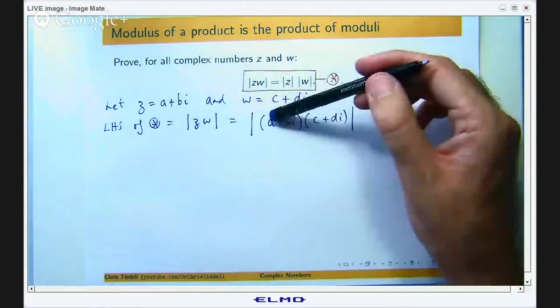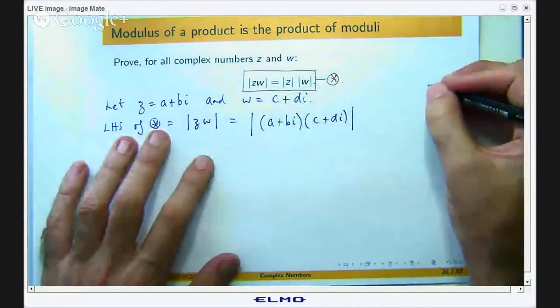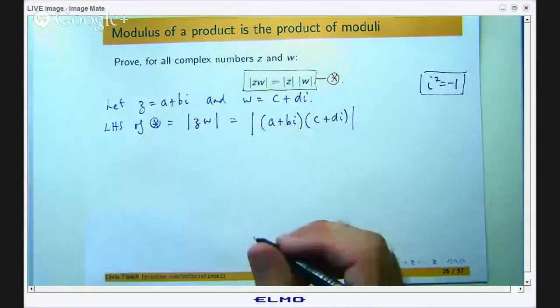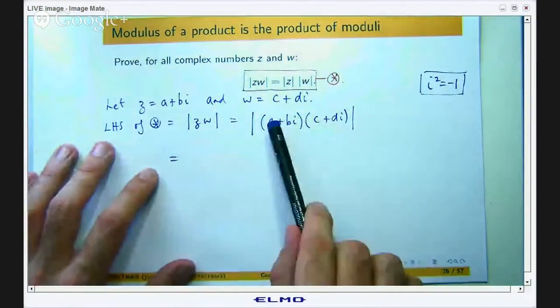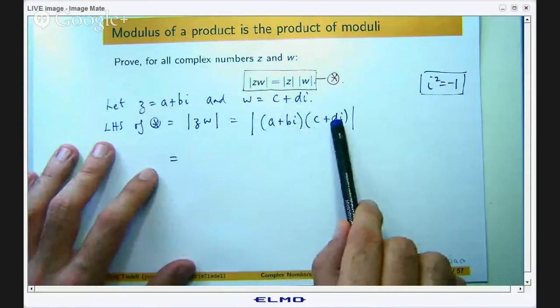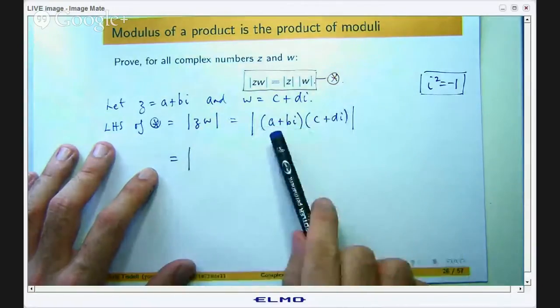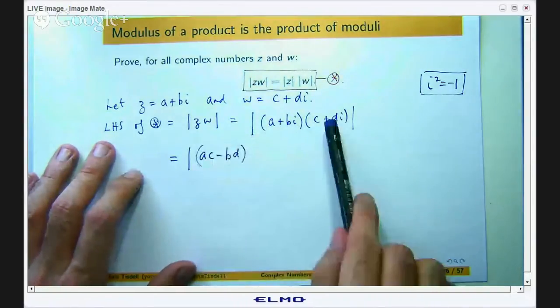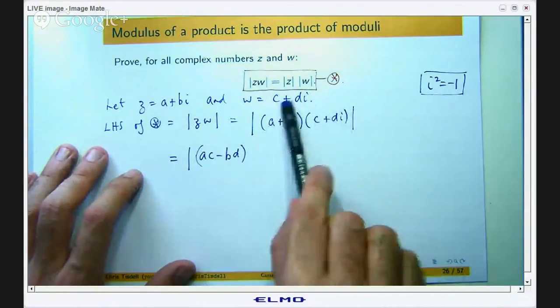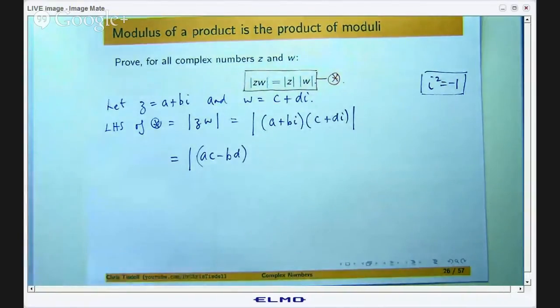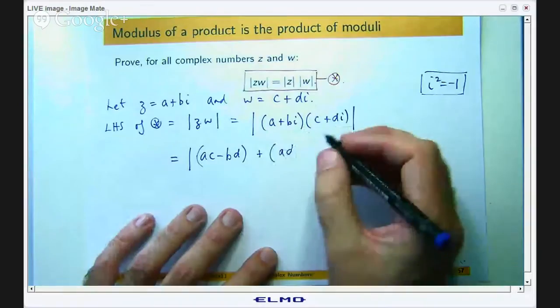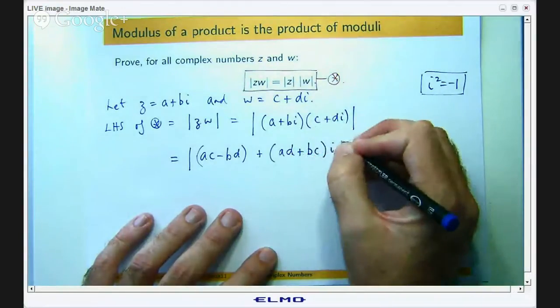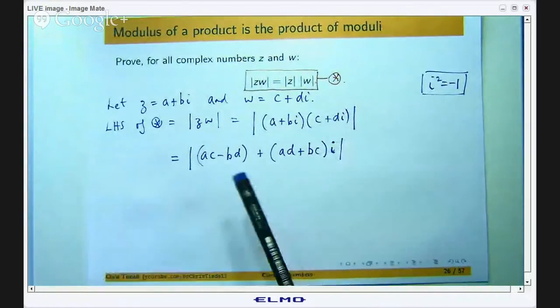Okay, so I can multiply that out just by distributing normally and remembering of course that i squared equals negative 1. So when I expand this I'm going to get a times c, bi times di, so i squared will be negative 1, so the real part of the product is going to be ac minus bd. Okay, and then let's do the calculations where the i's are left, so you're going to have adi plus bci, and if I factor out the i I will get what's left here.